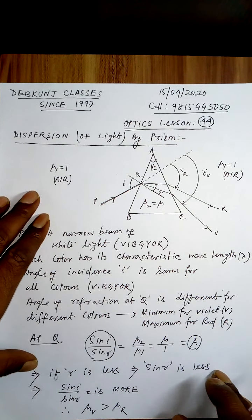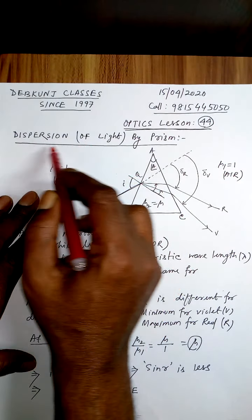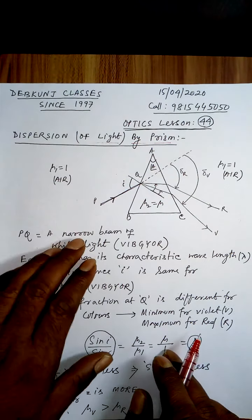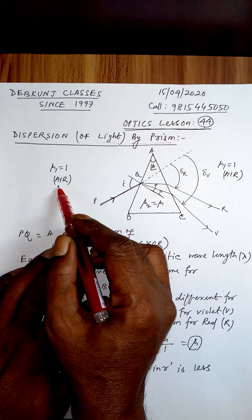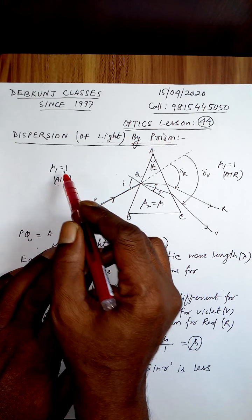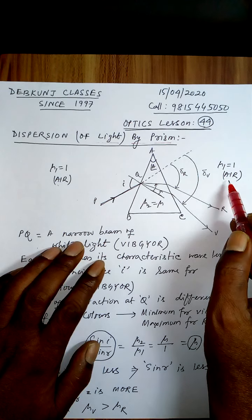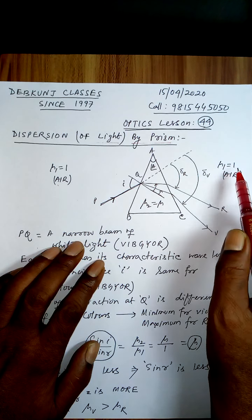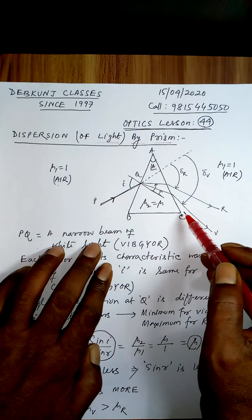Lesson 44: Dispersion of Light by Prism. On this side is air, a rare medium, refractive index mu1 is 1. On this side of the prism, again air, a rare medium, refractive index mu1 is 1. ABC is a glass prism.